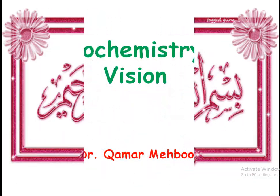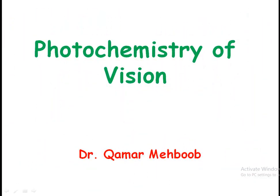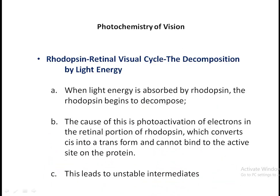Assalamu alaikum. In this video we will talk about the photochemistry of vision. For that we must discuss the rhodopsin-retinol visual cycle. It is a sub-visual cycle in which the decomposition of rhodopsin, the photochemical substance present in the rods, is decomposed and changed into retinol — the cis form is changed into the trans form.